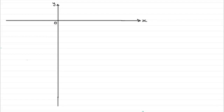Now we've got the velocity vector of P. We're told that it's minus three i plus two j. Let's mark on our unit vectors i and j. i would be a vector one unit long in the horizontal direction, and j would be one unit upwards. So those are my unit vectors i and j.